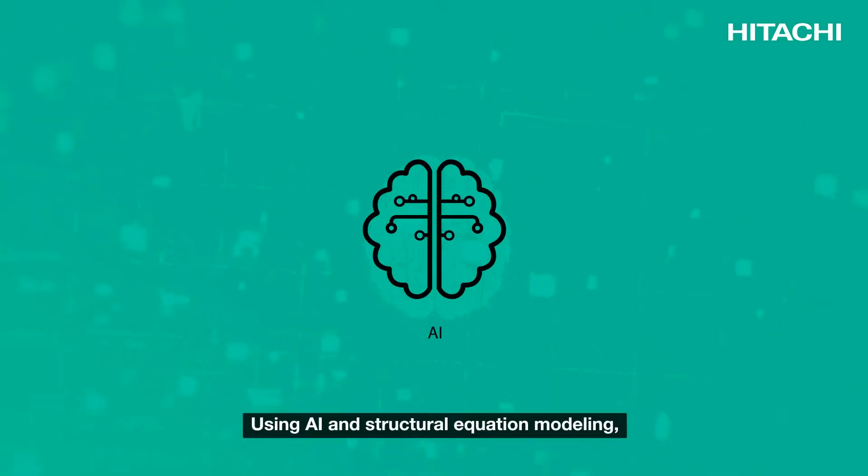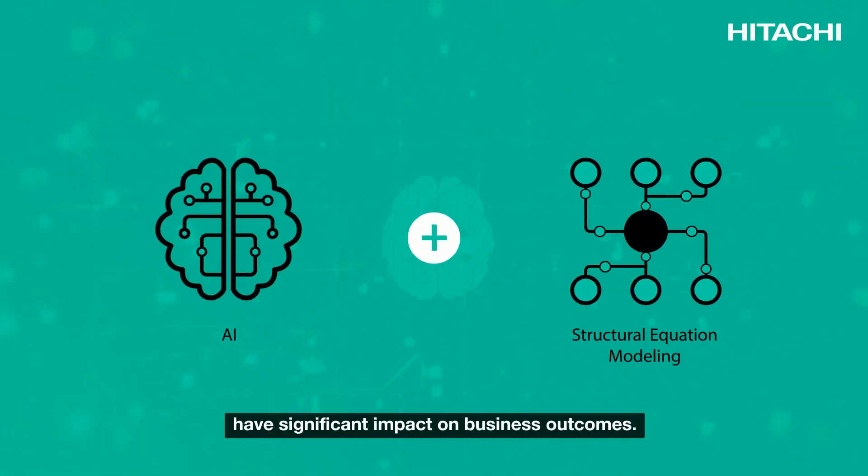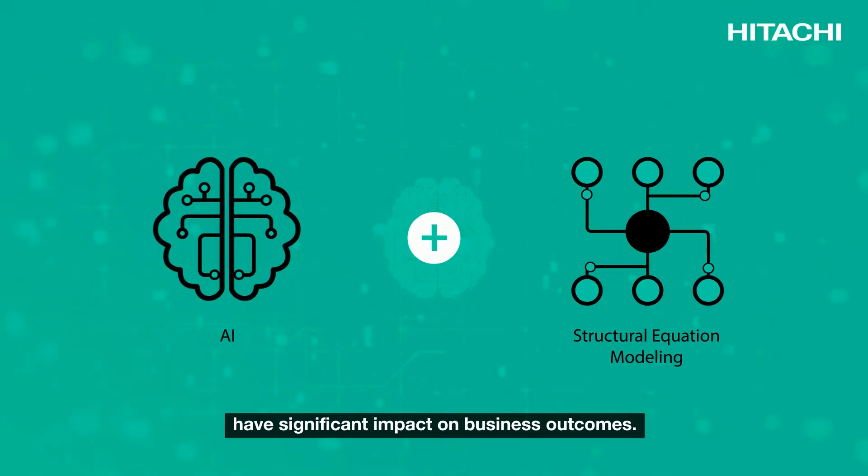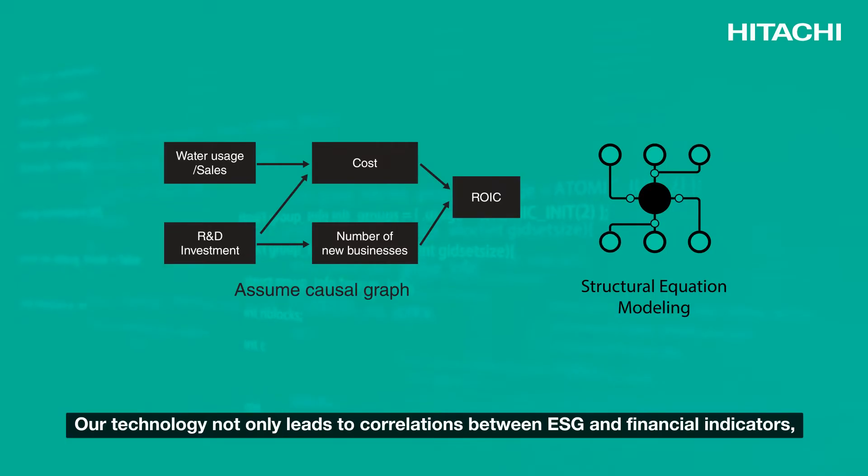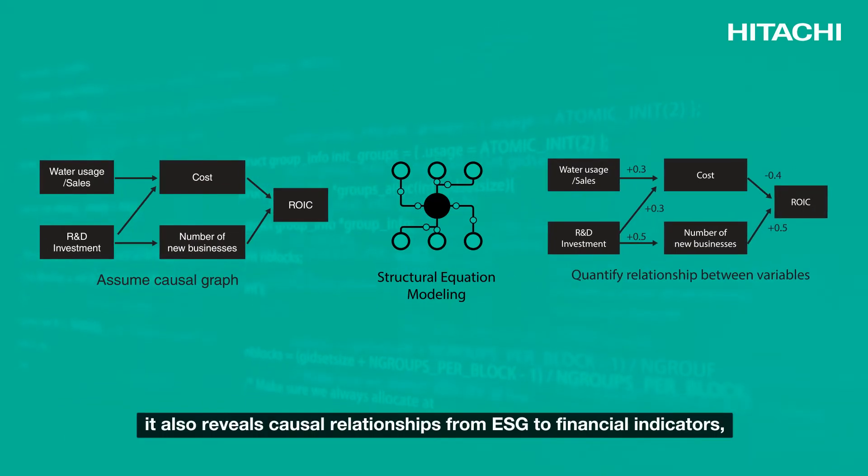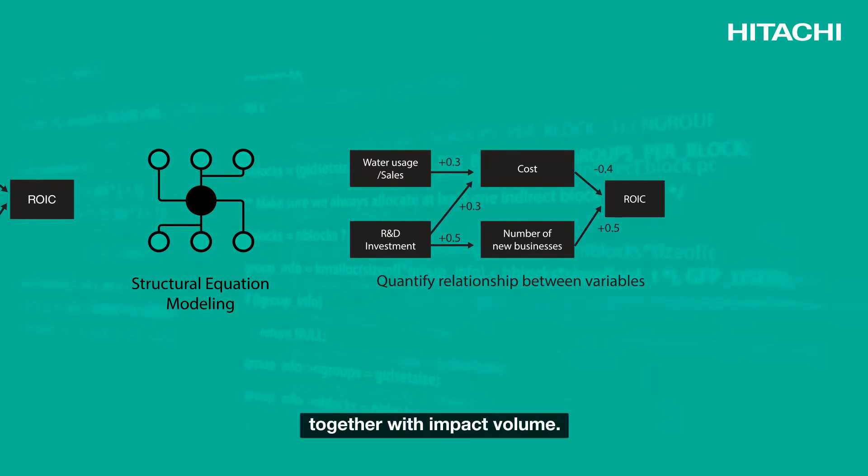Using AI and structural equation modeling, we are able to calculate which ESG indicators have significant impact on business outcomes. Our technology not only leads to correlations between ESG and financial indicators, it also reveals causal relationships from ESG to financial indicators together with impact volume.